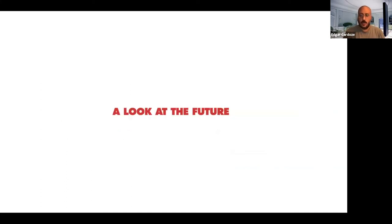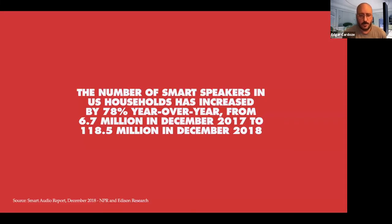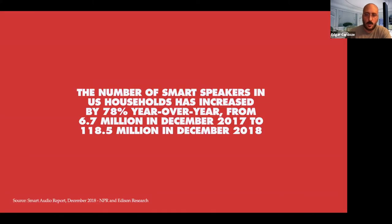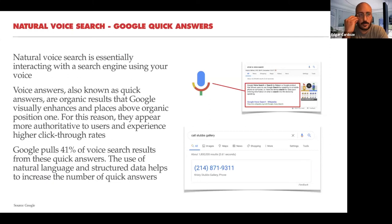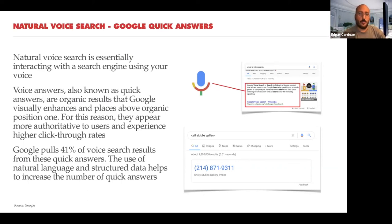A quick look at the future: voice search. The number of smart speakers in households increased 78% year over year from 6.7 million to 118.5 million — and that was in 2018, so it's much higher now. If there's any audio aspect to a performance or art, make sure you're incorporating voice search correctly. When somebody asks a voice assistant a question, 41% of the time Google pulls the featured snippet or answer box as the voice answer. With a normal search there are 10 results, but with voice there can only be one — another reason Google is moving toward serving answer boxes at the very top.